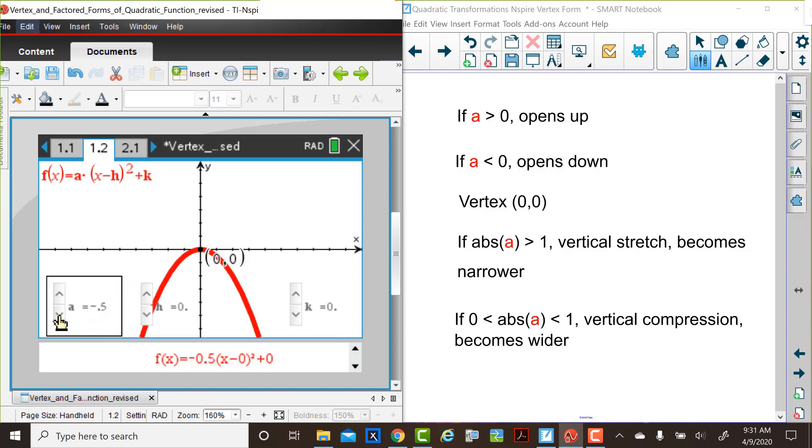When a is greater than 1, absolute value of a is greater than 1. So that could be in this particular case right now where a is negative, but the absolute value of a is greater than 1 is a vertical stretch.